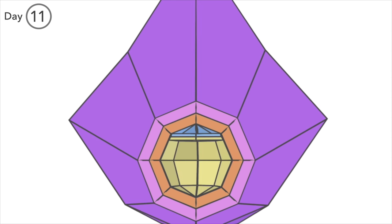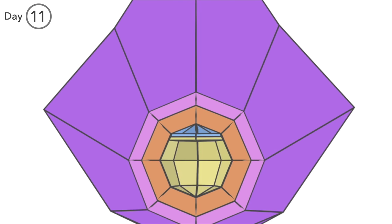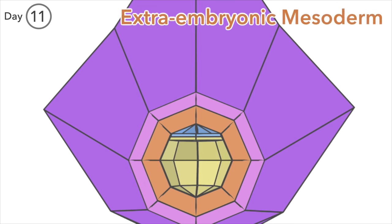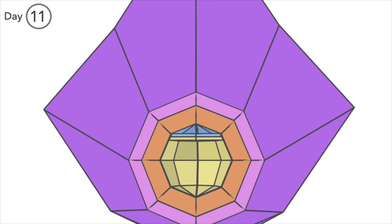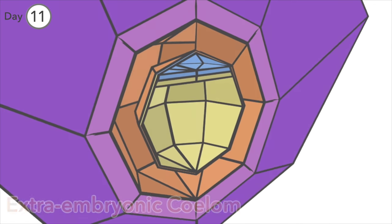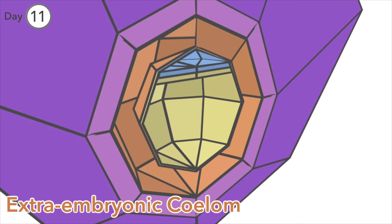Day 11. On the inner surface of the cytotrophoblast, tissue known as extraembryonic mesoderm has developed. In orange here. This eventually develops cavities which form the extraembryonic coelum. Coelum is sort of another word for cavity.